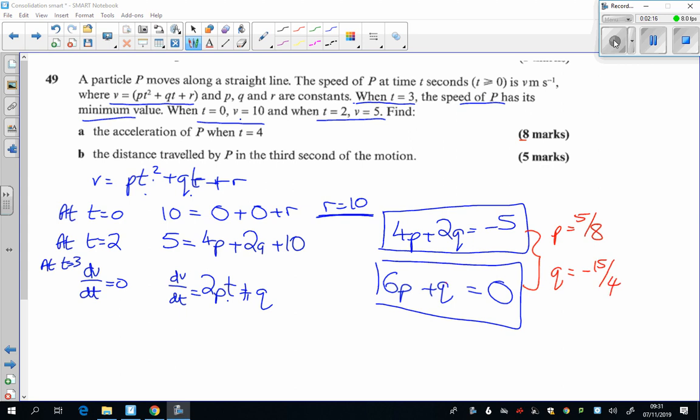Well, we actually haven't done anything of the question yet. The question says, find the acceleration when t is 4. And of course this is the acceleration. When you differentiate the velocity, that is the acceleration. So the acceleration is 2 times by the P number, which we've just figured out is 5 eighths. The t is when t is 4. And the Q number is minus 15 over 4. So that acceleration turns out to be 1.25, or 5 over 4.